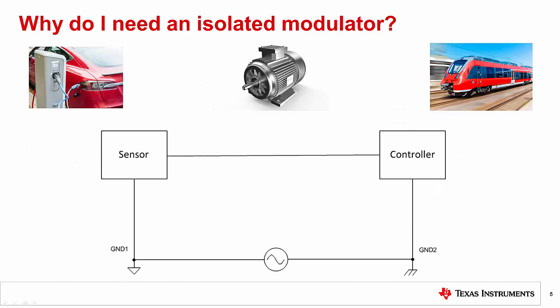Isolated modulators are widely used in many industrial and automotive applications, but why are they needed? The most common reason is protection from ground loops. Electrical installations can cause a large ground potential difference between two remote nodes, ground 1 and ground 2. A direct connection between these two nodes closes the ground loop.